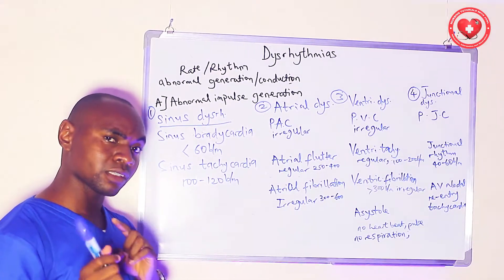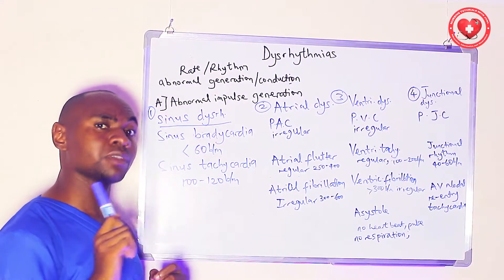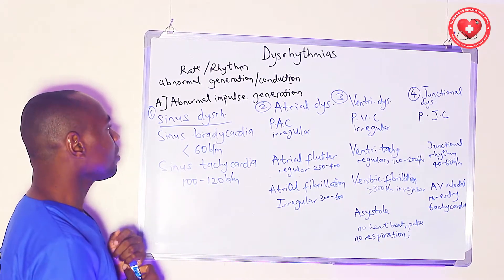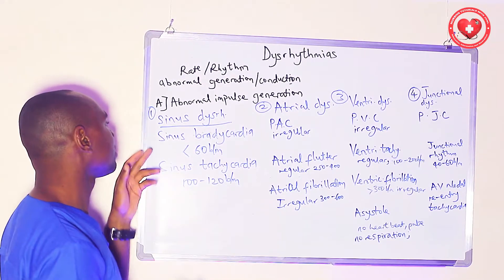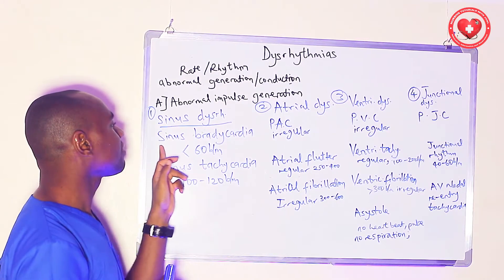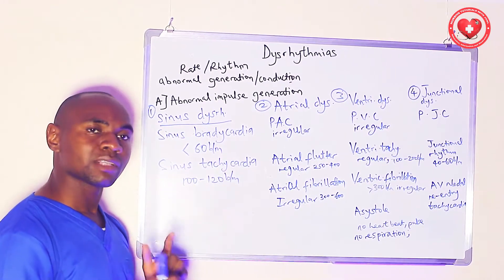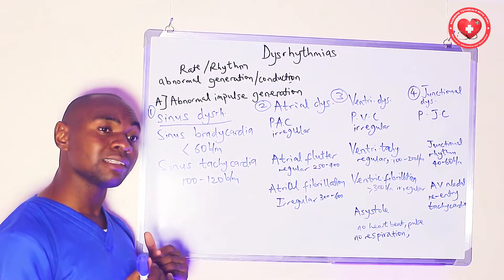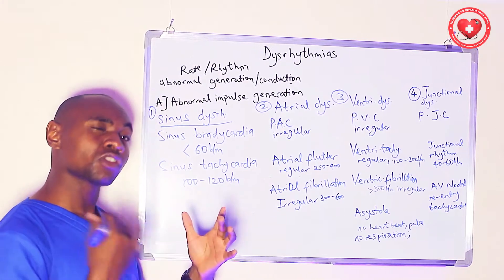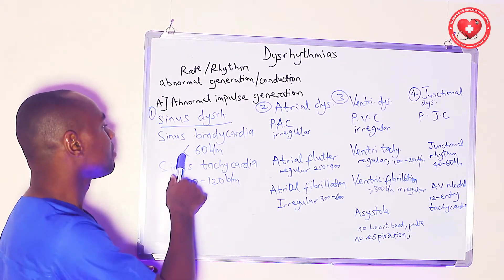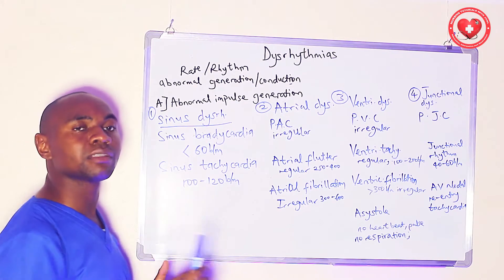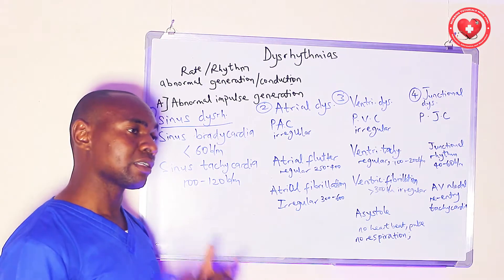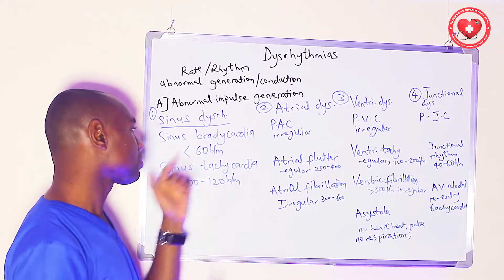For better understanding, you can check the video on the conducting system of the heart. Under sinus dysrhythmias, the first is sinus bradycardia, meaning the sinoatrial node releases electrical impulses at a slower rate than normal — less than 60 beats per minute. This normally occurs during sleep, but can also occur in certain disease conditions.